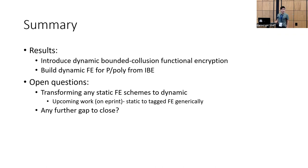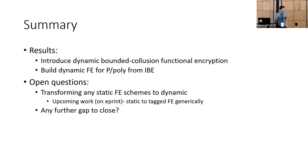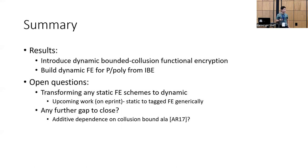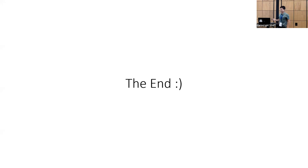Another open question is closing the gap between the negative and positive results in bounded collusion functional encryption. There are a couple of bounded collusion schemes where the dependence on the collusion bound is additive — can this be done even better, or more generically? And that is it for my talk.